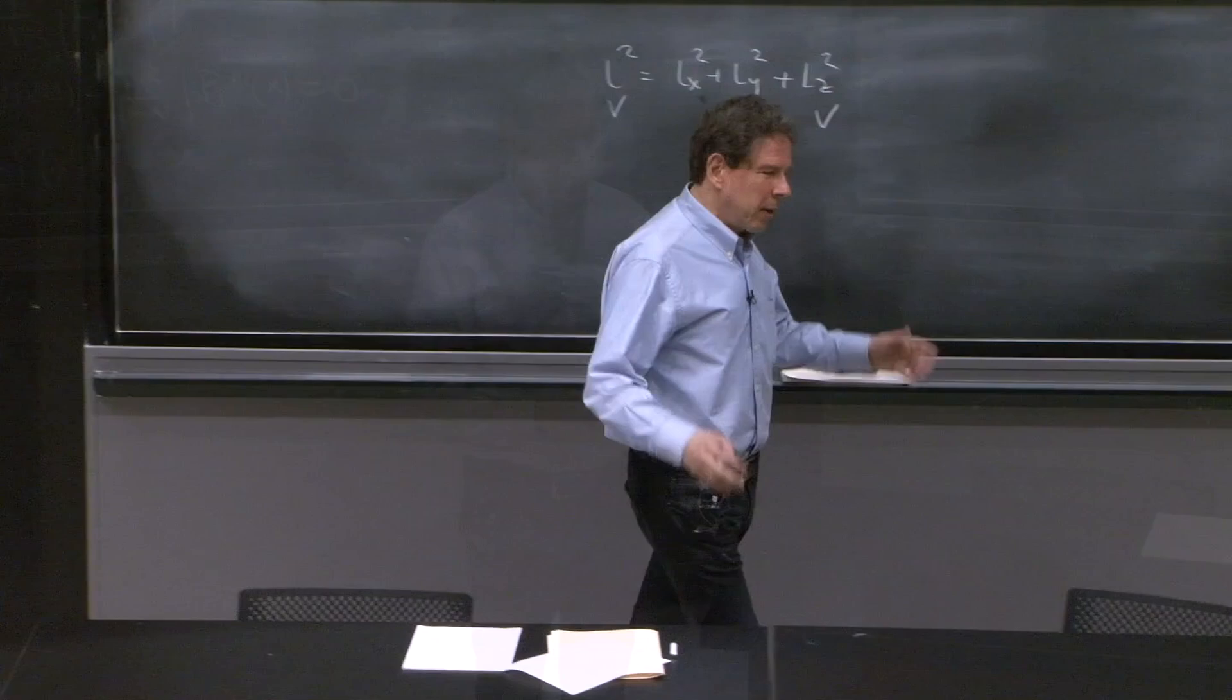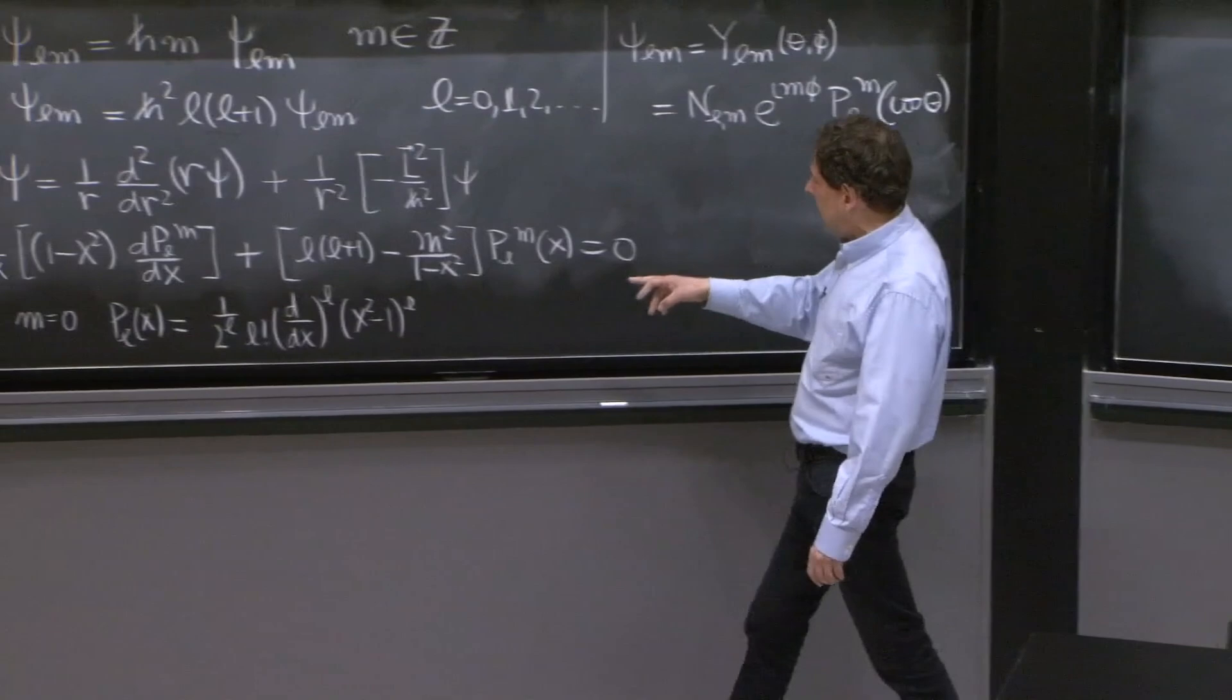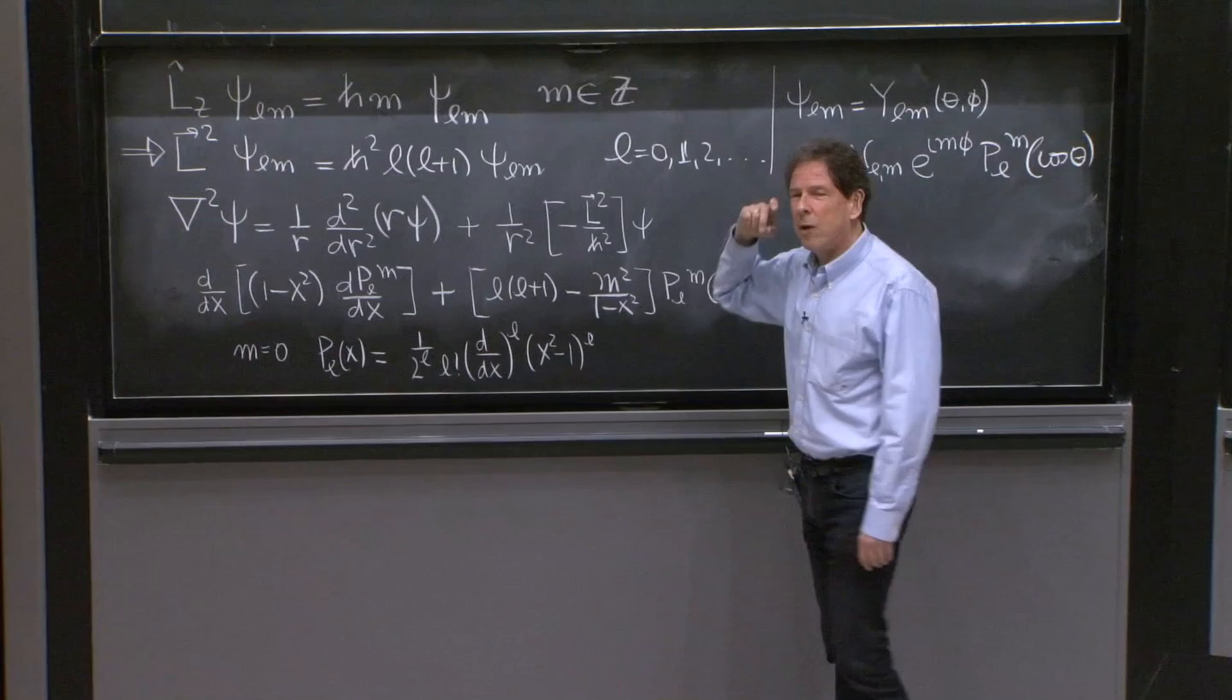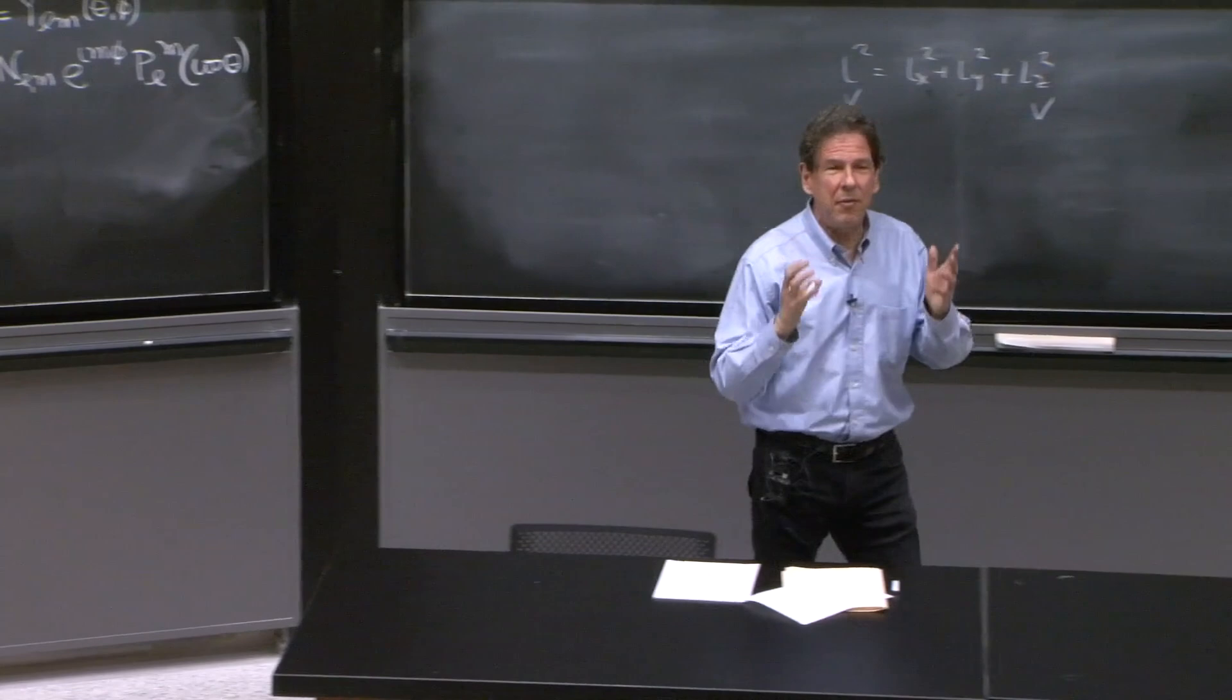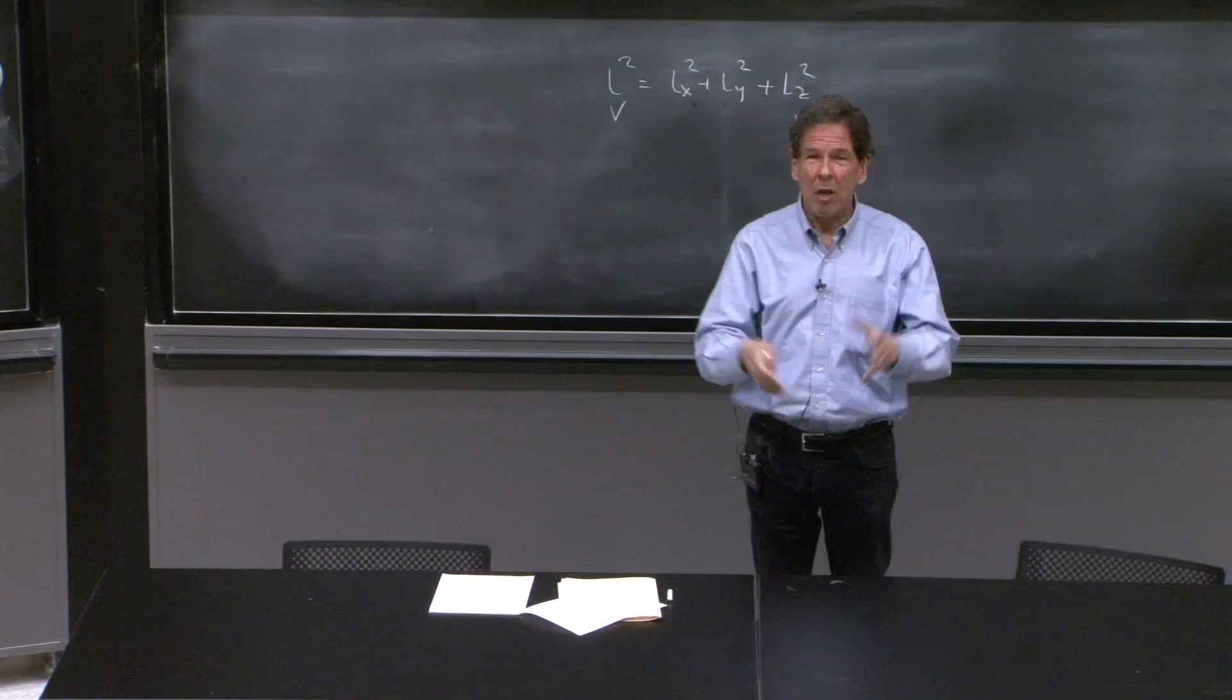So what do we have to do today? We want to complete this analysis. We'll work back to this equation and then work back to the Schrodinger equation to finally obtain the relevant differential equation that we have to solve if you have a spherically symmetric potential. So the equation will be there in a little while.